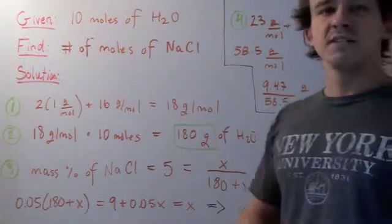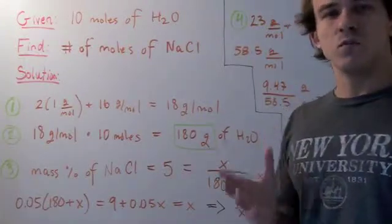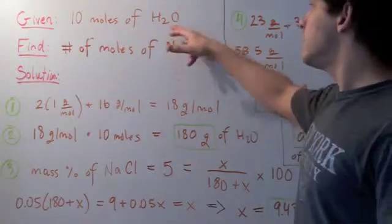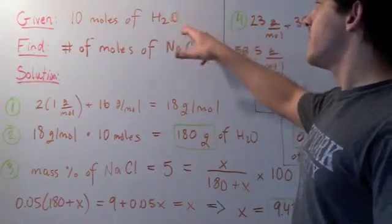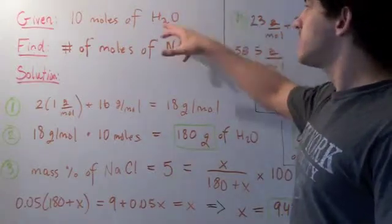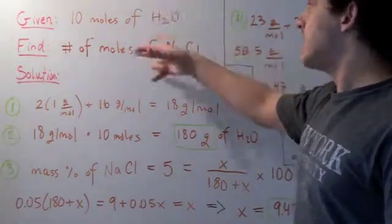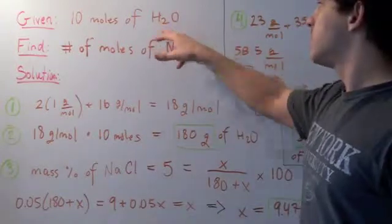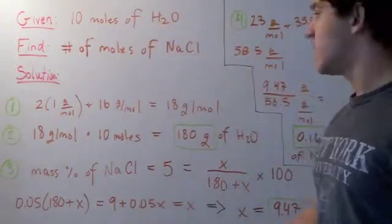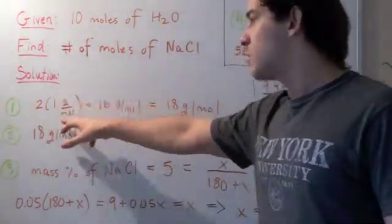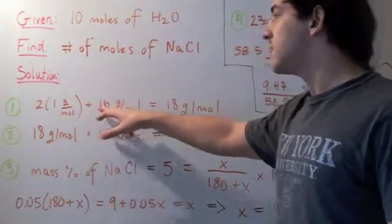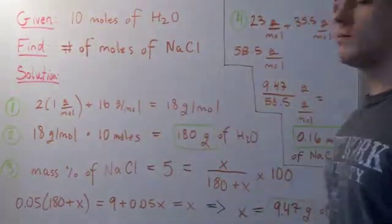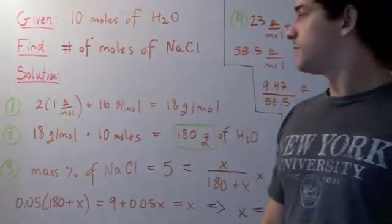The first step is to find the molecular weight of water. This can be done by adding the atomic weight of oxygen plus 2 times the atomic weight of H, because we have a subscript of 2. So 2 times 1 grams per mole plus 16 grams per mole gives us 18 grams per mole of water.